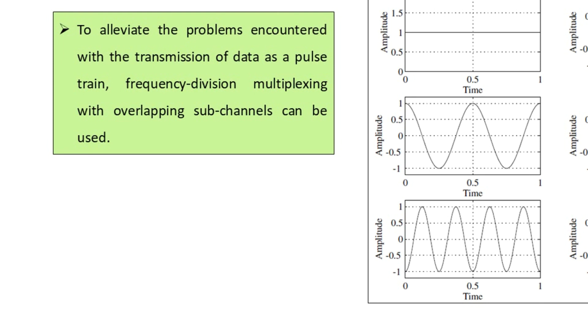The modulated sub-carriers are summed and transmitted as one composite analog signal. At the receiver, the analog signal is passed through a bank of coherent demodulators whose outputs are tested to determine the transmitted digits. This is the basic idea behind the multi-carrier modulation or demodulation scheme for digital data transmission.